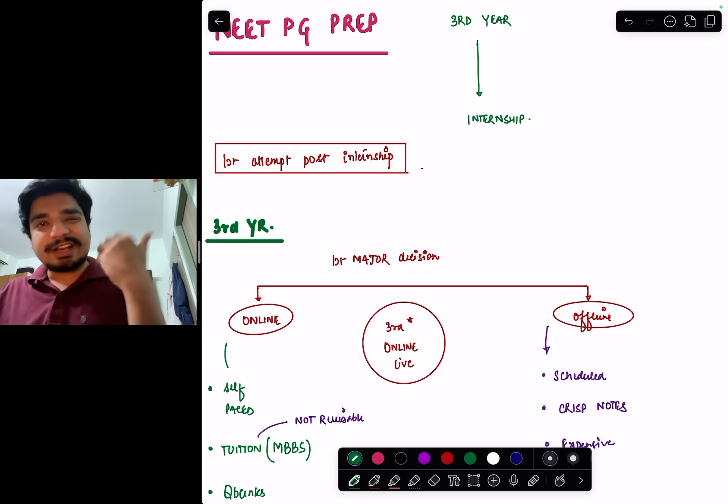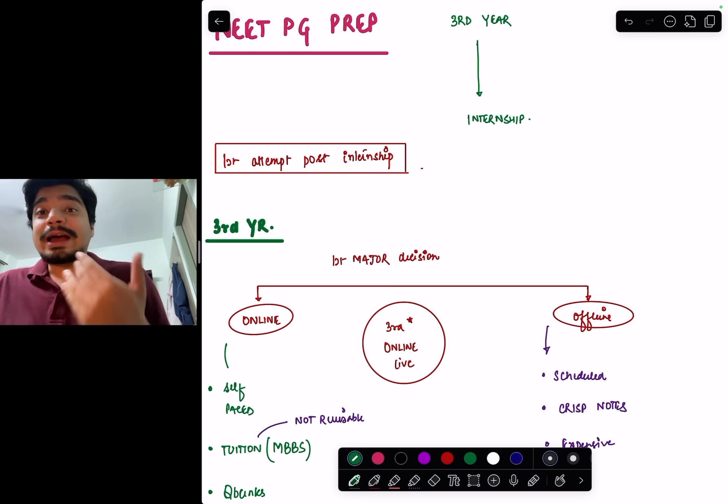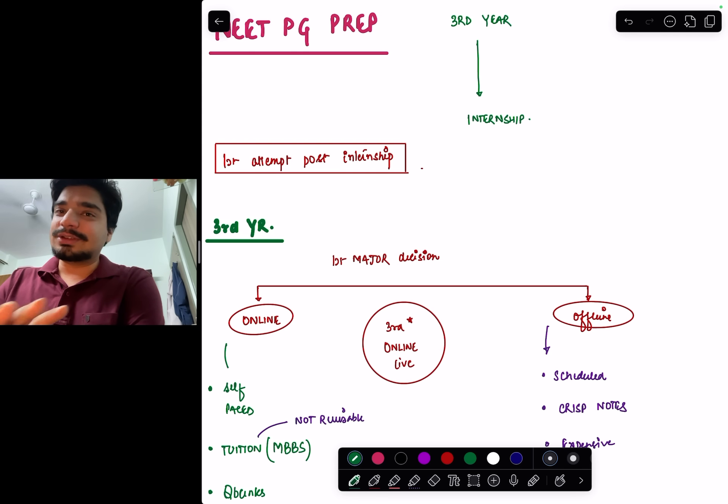If a first or second year student is watching this video, there's no point. You should stick to reading Robbins, reading Anant Narayan, reading KDT, reading Gray's Anatomy - not the actual Gray's, Chaurasia. Build your concepts and those concepts are going to be very beneficial in internship and final year. Trust me on that. I'm a coaching faculty right now and despite that, I would say please don't compromise your standard textbook in first and second year. From third year, yes, think about NEET PG preparation.